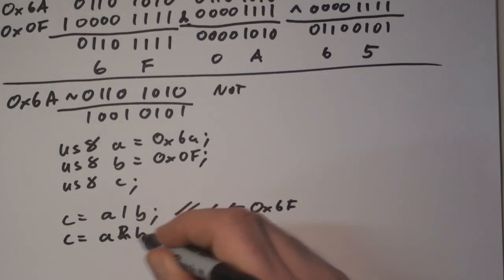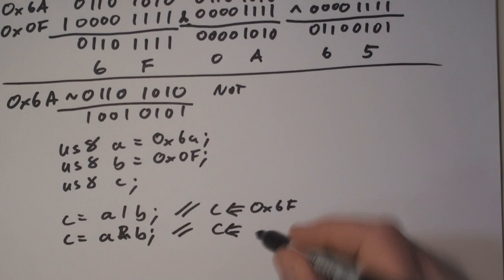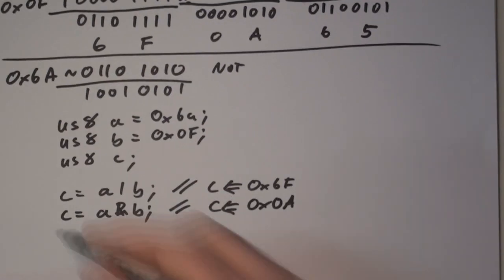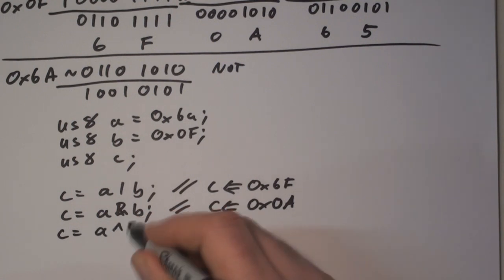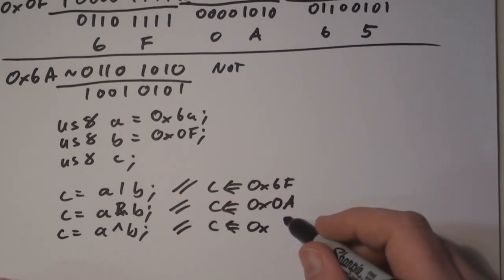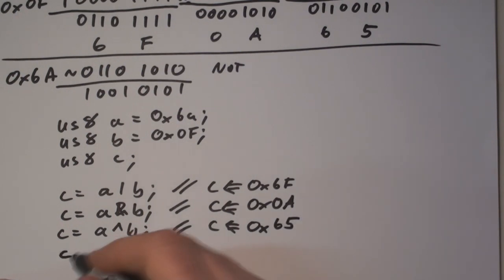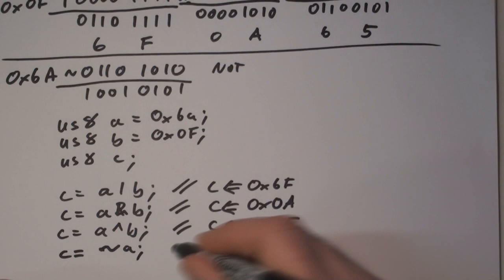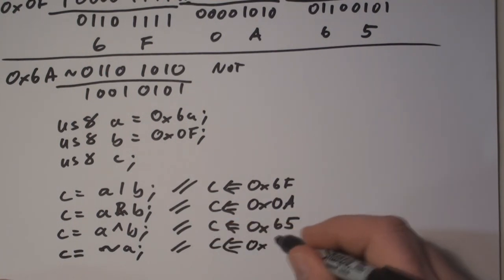To do an AND operation, you would say C equals A, AND with B, and the value 0A, as computed above, would be stored in C. And if we were to do an EXCLUSIVE OR, it would be C is equal to A, EXCLUSIVE OR B, and the value 65 would be stored in C. And if we wanted to do inversion, we just say tilde, or invert, A, and the resultant 95 is stored in C.